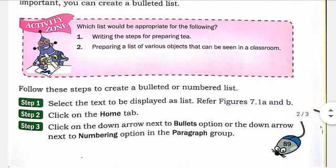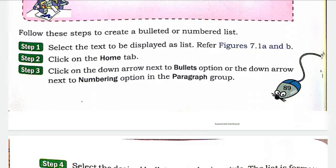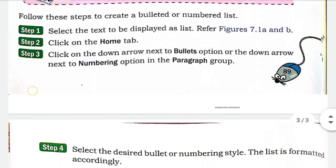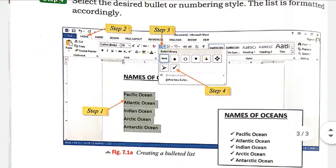Bullet या number list बनाने के steps: Step 1 — select the text to be displayed as a list (refer Figure 7.1). Figure 7.1 में दिखाया गया है कि सबसे पहले Home tab पर click करना है। उसके अंदर Paragraph group में Bullet का option रहता है, उस पर click करना है। Number का भी option रहता है — जो आपको चाहिए वो select करके OK कर दें। Step 1 में पहले Word में text list type किया गया, फिर उस text को select किया।